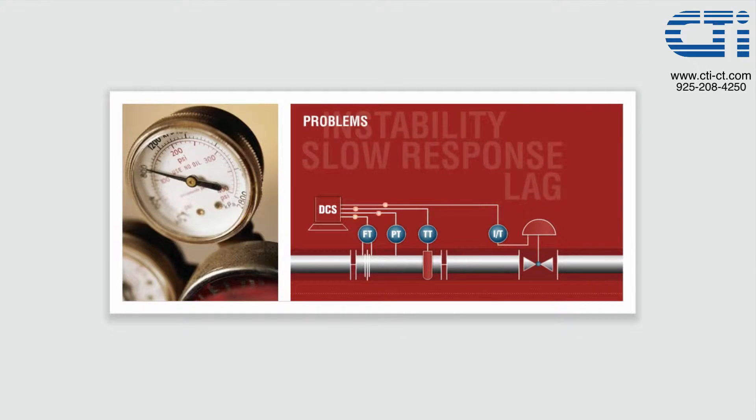The problem many plants face is that the control loops are slow in response. The individual components are usually very accurate, but when they operate as a complete system they produce a process lag that is too long to achieve the desired level of control.